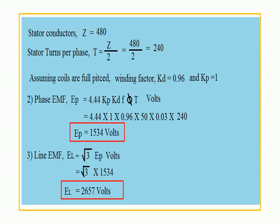Once you get the conductors per phase, the next step is stator turns per phase: T = Z/2 = 480/2 = 240. Then, assuming the coils are full-pitched, Kp = 1. Kd is given as 0.96; if not given, you can assume Kd = 0.96. Remember that always.